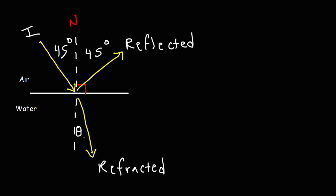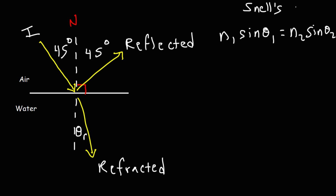This angle here is known as the refracted angle. In order to calculate that, we need to use something called Snell's law, also known as the law of refraction. It's N1 times sine theta 1, which is equal to N2 times sine theta 2. Snell's law can help us calculate the angle of refraction or the index of refraction.